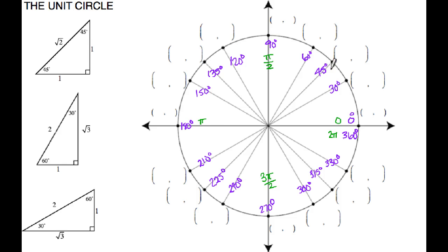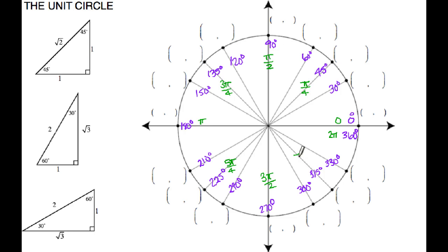Just like we cut 90 in half to get 45, if I cut pi over 2 in half to get the radian for 45, that's going to be pi over 4. So counting around: 1 pi over 4, 2 pi over 4, 3 pi over 4, 4 pi over 4, 5 pi over 4, 6 pi over 4, and then finally 8 pi over 4.